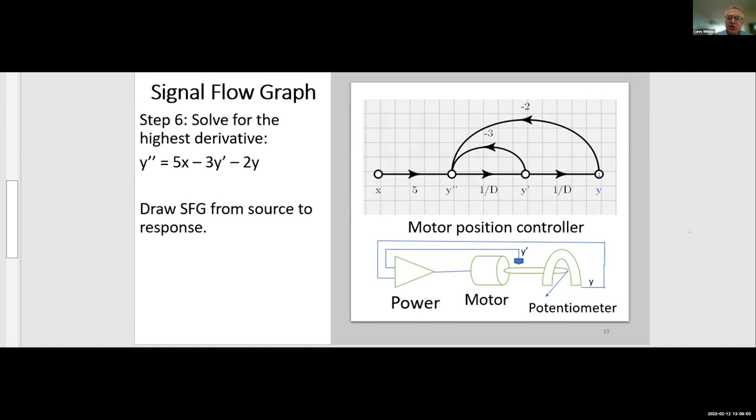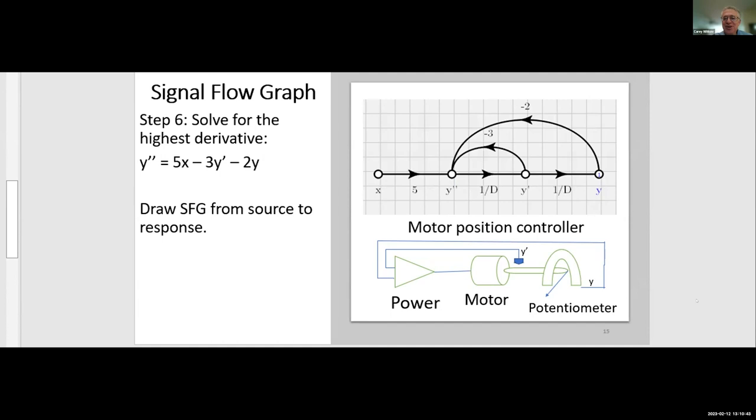Now, the interesting thing here is the differential equation that this signal flow graph depicts was, in fact, from a feedback control system. Specifically, a motor position controller or servo mechanism, for example, for controlling flaps on an airplane. Each feedback loop has a direct physical interpretation. The motor position y alters the wiper position on the potentiometer or rheostat, a variable resistor. So it feeds the motor position information back to the power supply controller of the motor. That's the outer loop that goes from y to y double prime, controlling the motor's acceleration and the torque. But the velocity also of the motor shaft was read by a magnetic sensor. And its output also feeds back to the motor supply controller.